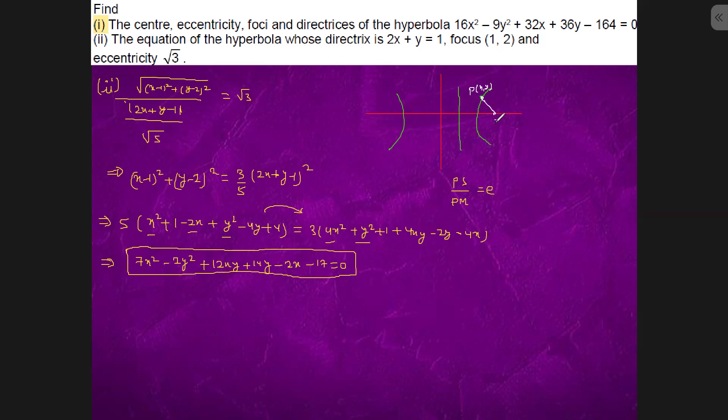They will have some distance with focus and they will have some distance with point M. So we know that PS by PM is e.